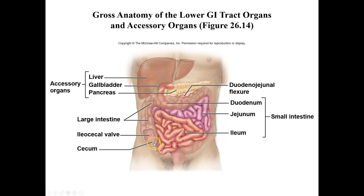Hanging off of the cecum, which is the first part of the large intestines, is this tiny little structure called the vermiform appendix. The appendix doesn't have a lot of function now, but it does play a role in our digestive system — producing good bacteria. It typically harbors a group of bacteria so that when some infection occurs and we have to take antibiotics that kill off bacteria in the intestines, the appendix can repopulate the large intestines with those bacteria.